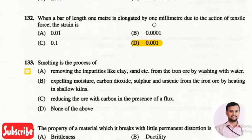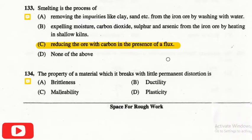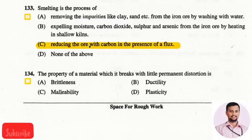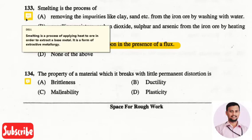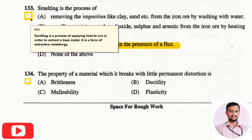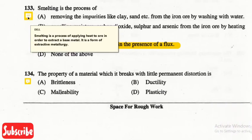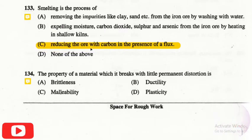The next question is: smelting is a process of? The right answer is option three, reducing the ore with carbon in the presence of flux. Smelting is a process of applying heat to the ore in order to extract the base metal from the ore, reducing the ore with carbon in the presence of flux.